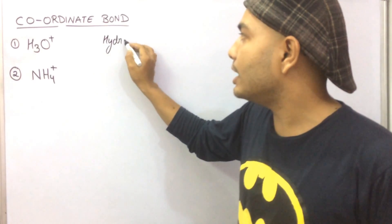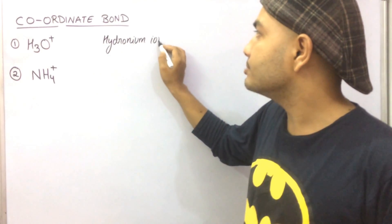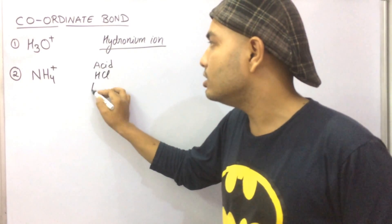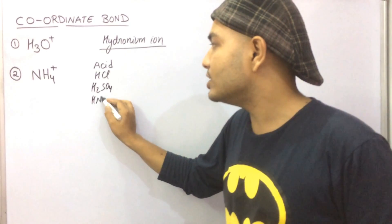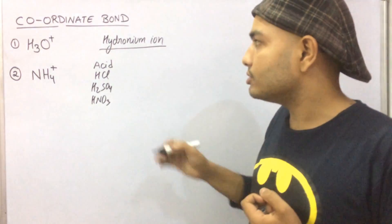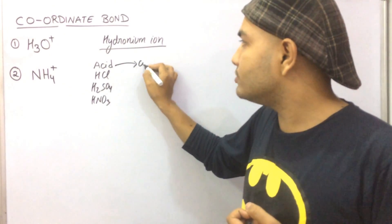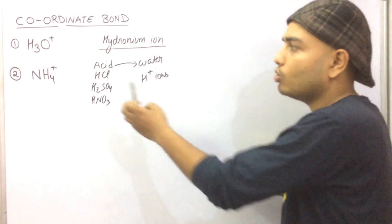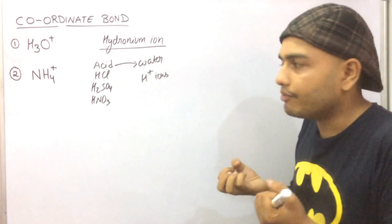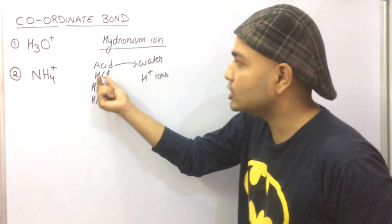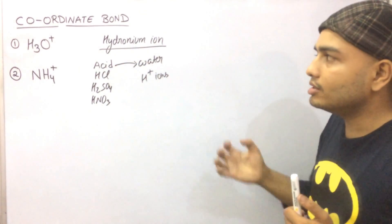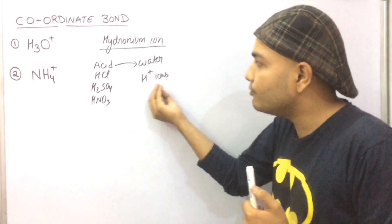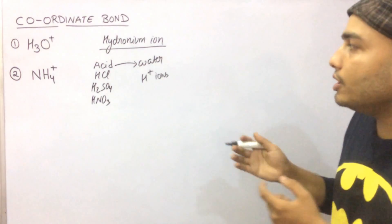What really is a hydronium ion? Whenever we have some acid — suppose we have HCl, H2SO4, HNO3, and so on — whenever an acid dissolves in water, it releases H+ ions. This H+ from HCl goes into water. This is the property of most acids: they give H+ ions.